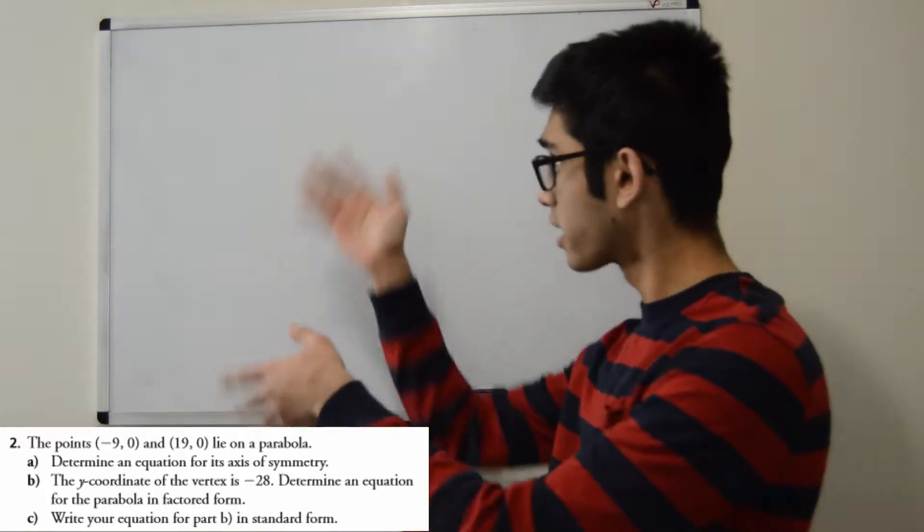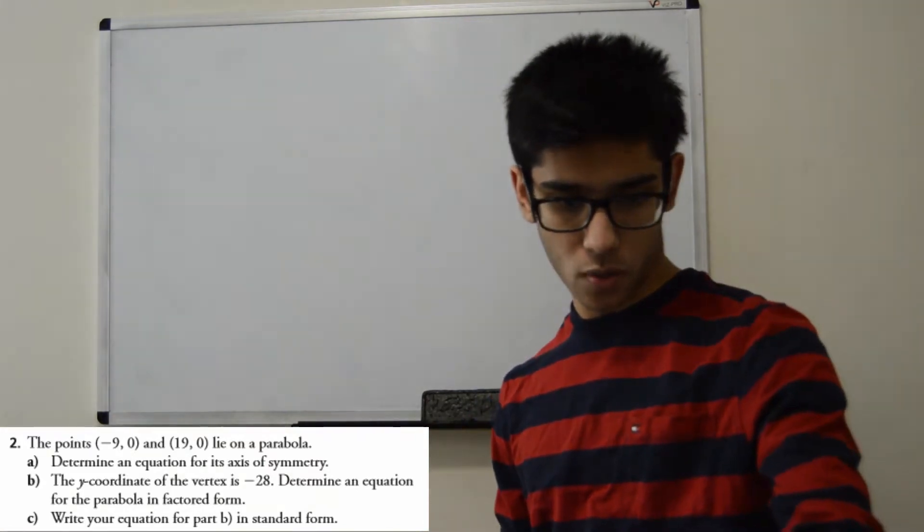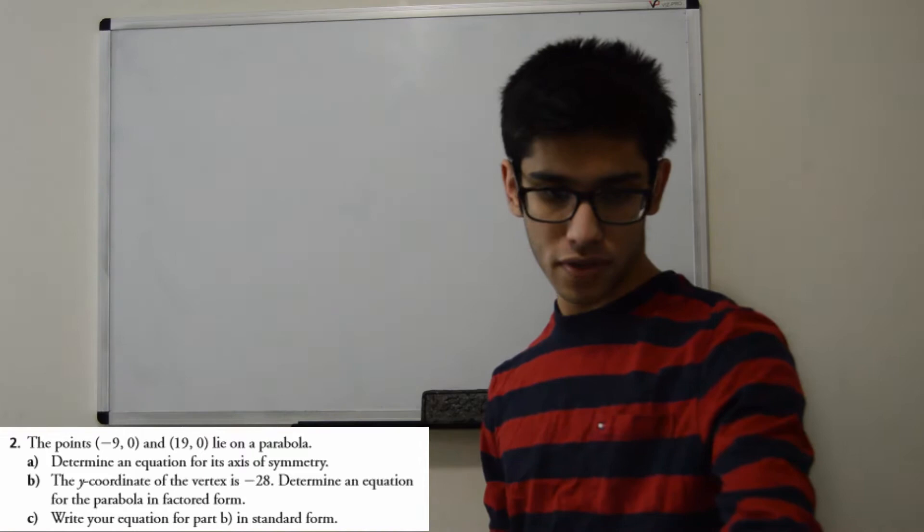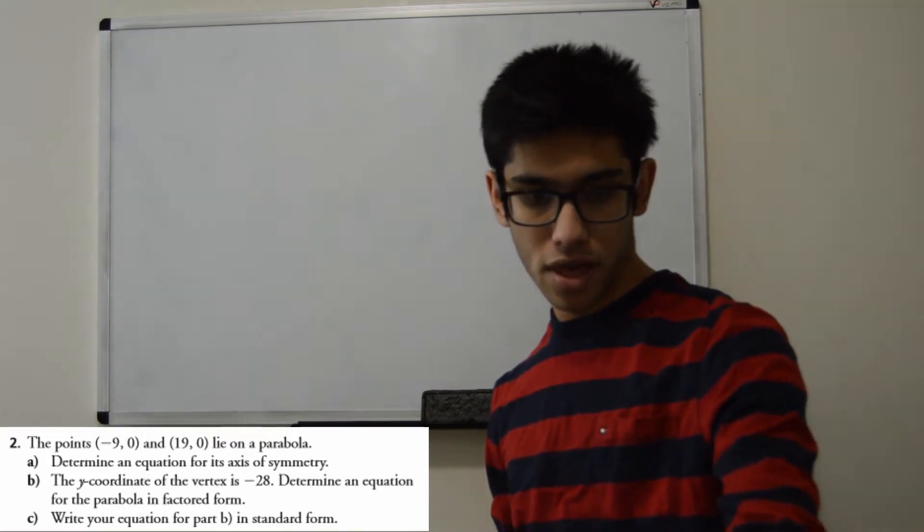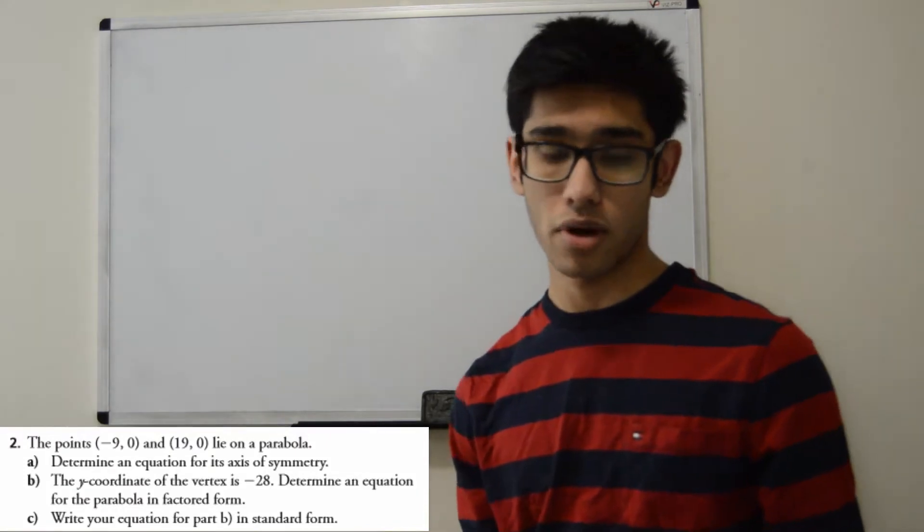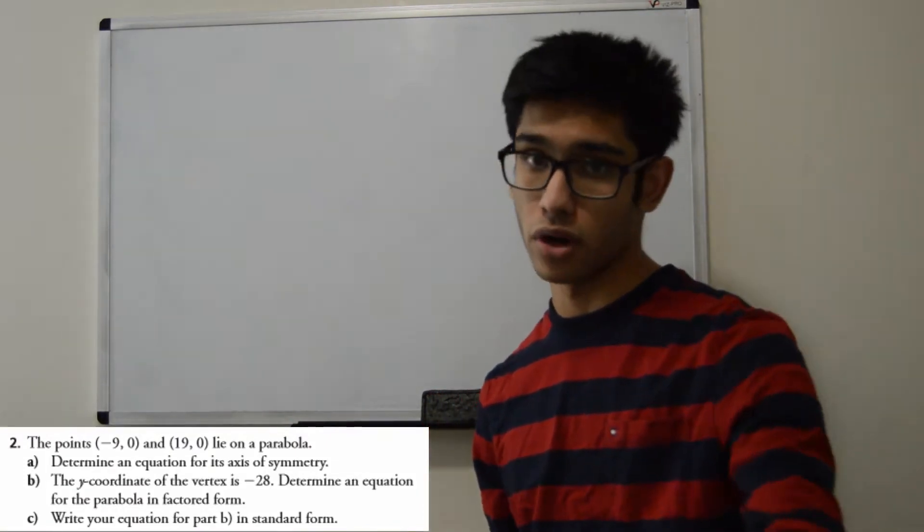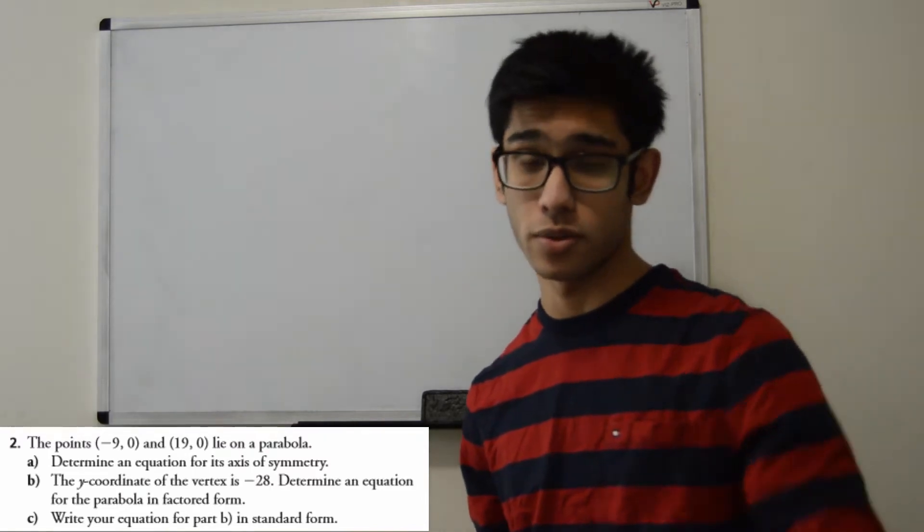So the question is that there's two points, so one is (-9, 0) and the other point is (19, 0) and both of them lie on a parabola, so that tells us that it's a quadratic problem because we have the word parabola there. And we also see our two zeros, where the graph touches the x-axis.